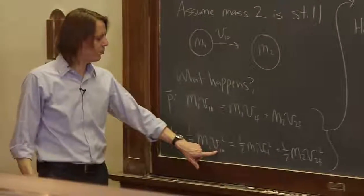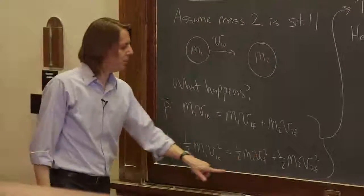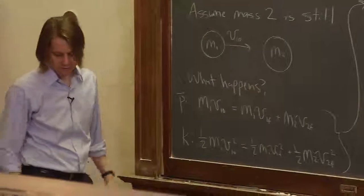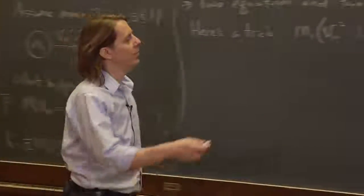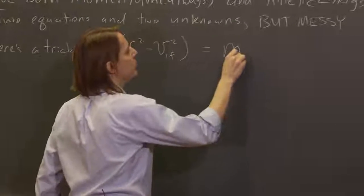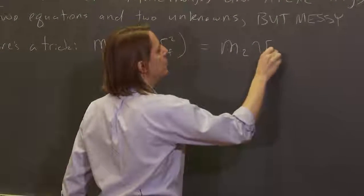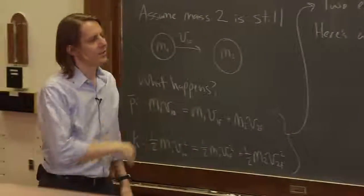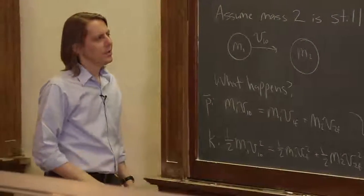So we're going to end up with mass one times V1 naught squared minus V1F squared. So there's the V1 naught term squared. It's a positive. We brought this one over, it became negative. We pulled out the M1, and we've canceled the half. So there's that. And what is left is the M2 terms, V2F squared on the right. Again, I canceled out the half.